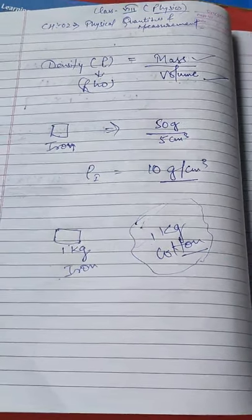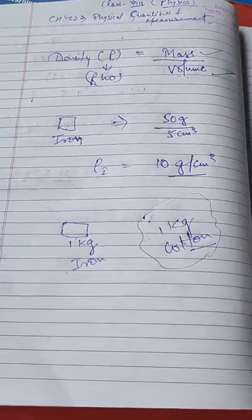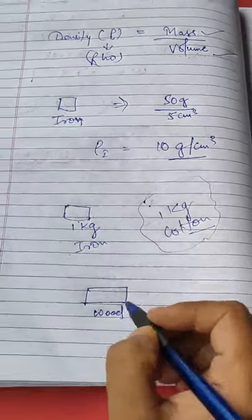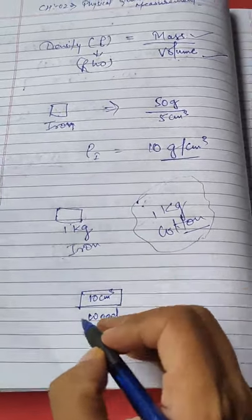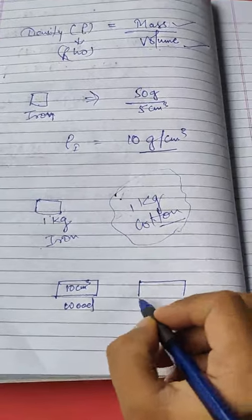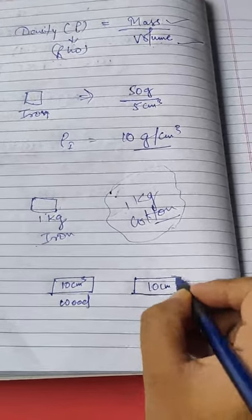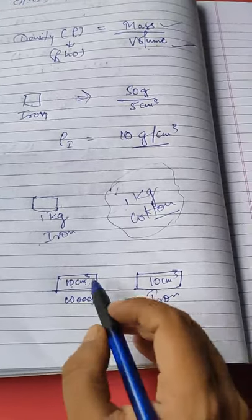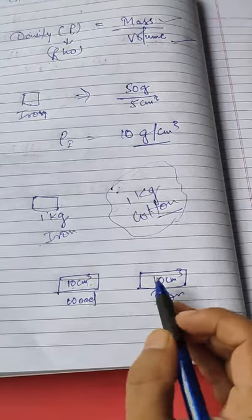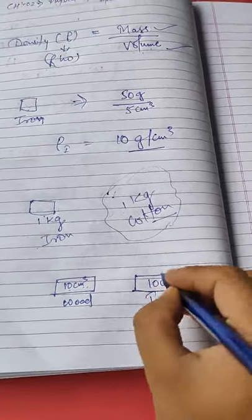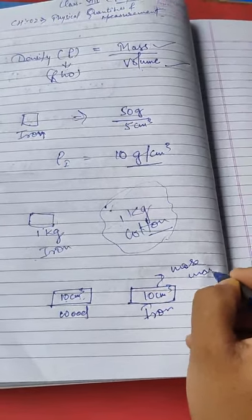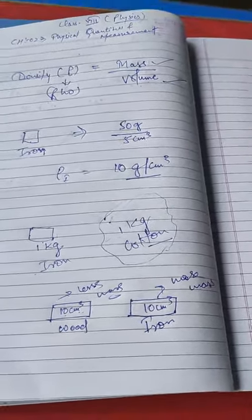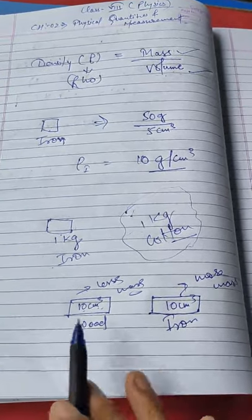Similarly, two substances having the same volume can have different masses. For example, take a piece of wood with a volume of 10 centimeter cube and an iron piece also with a volume of 10 centimeter cube. Their volumes are the same, but the masses are different because iron is more dense — its molecules are more closely packed — so iron has more mass and wood has less mass.